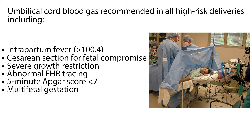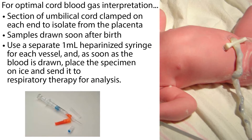Analyzing both the arterial and venous specimen can give insight into the cause of acidosis and fetal distress. For optimal interpretation, a section of umbilical cord should be clamped on each end to isolate it from the placenta, and samples drawn soon after birth. Use a separate 1 mL heparinized syringe for each vessel, and as soon as the blood is drawn, place the specimen on ice and send it to respiratory therapy for analysis.